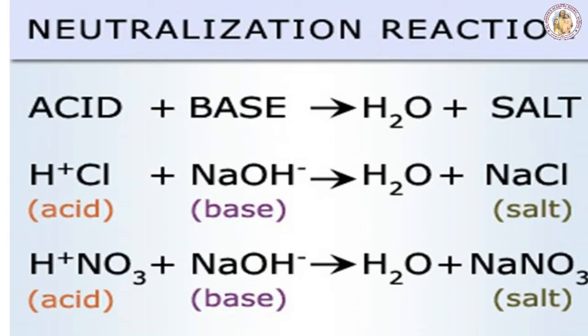The next type is neutralization reaction: acid reacts with a base to form a salt and water. For example, NaOH + HCl → NaCl + H2O. Another example: ammonium hydroxide reacts with nitric acid to form ammonium nitrate and water. This is called a neutralization reaction.